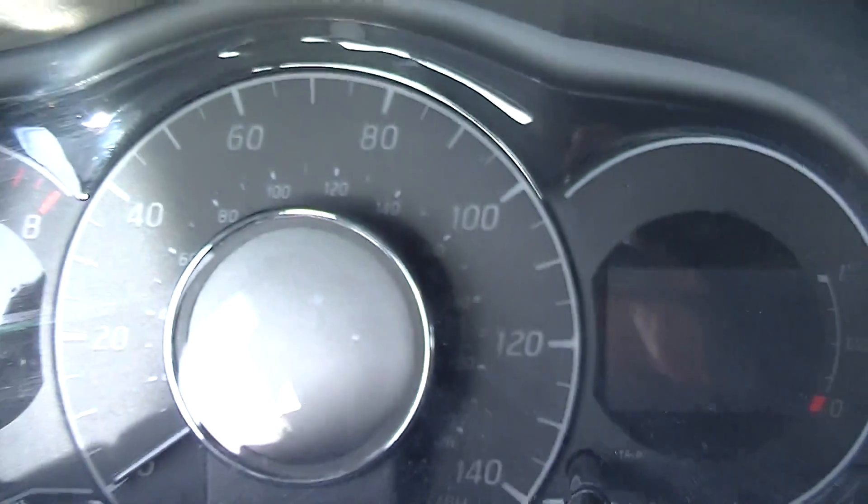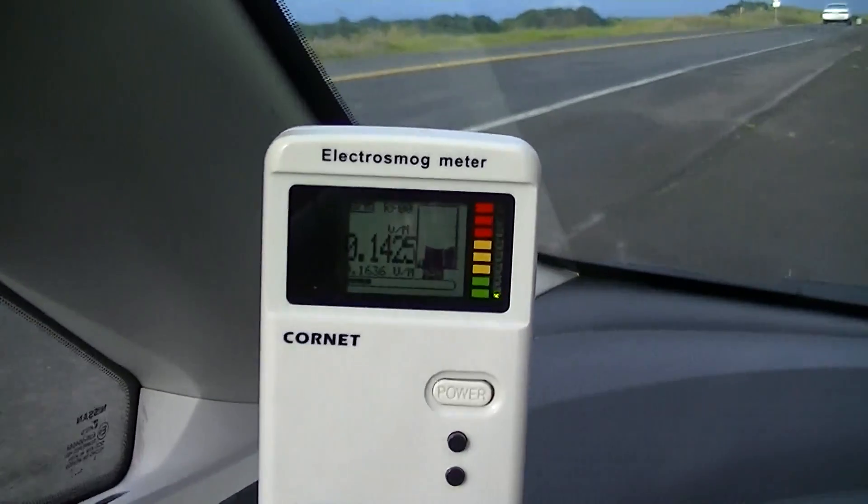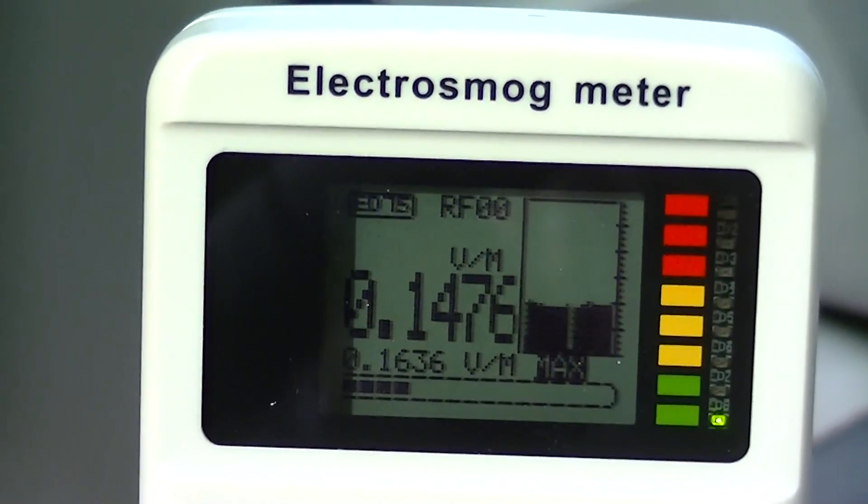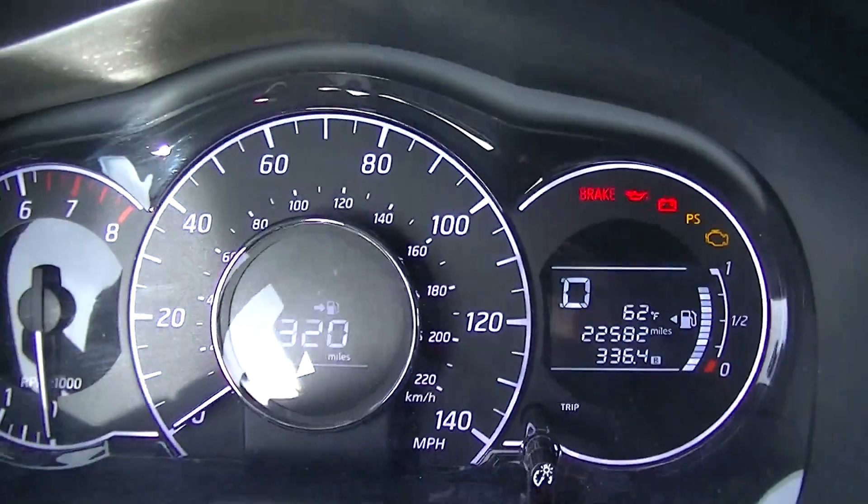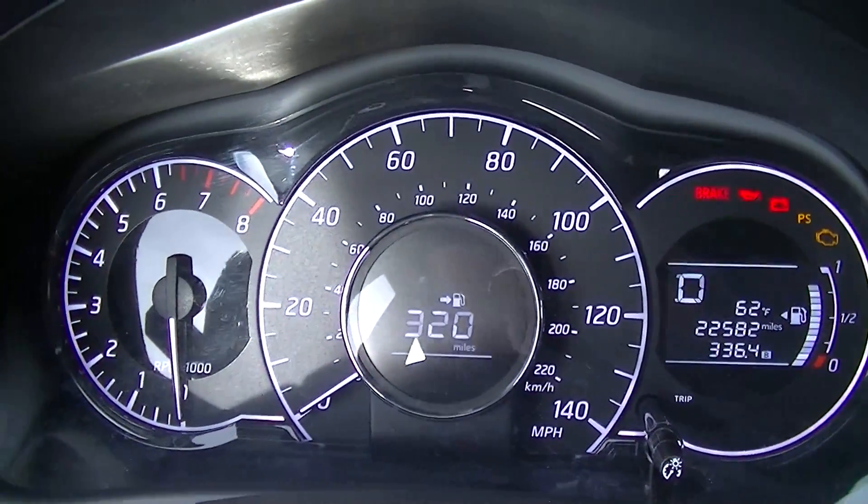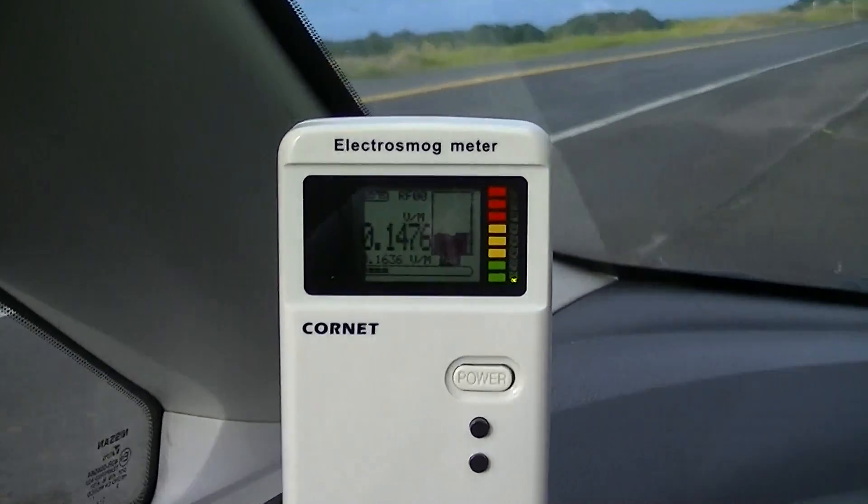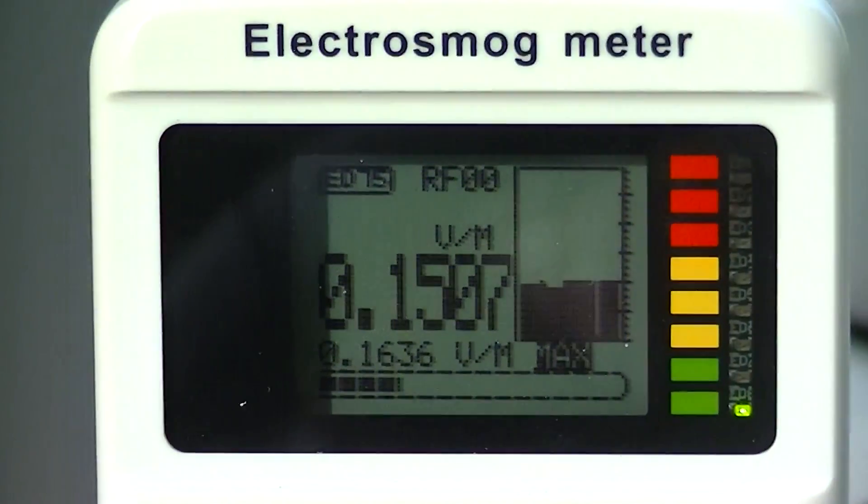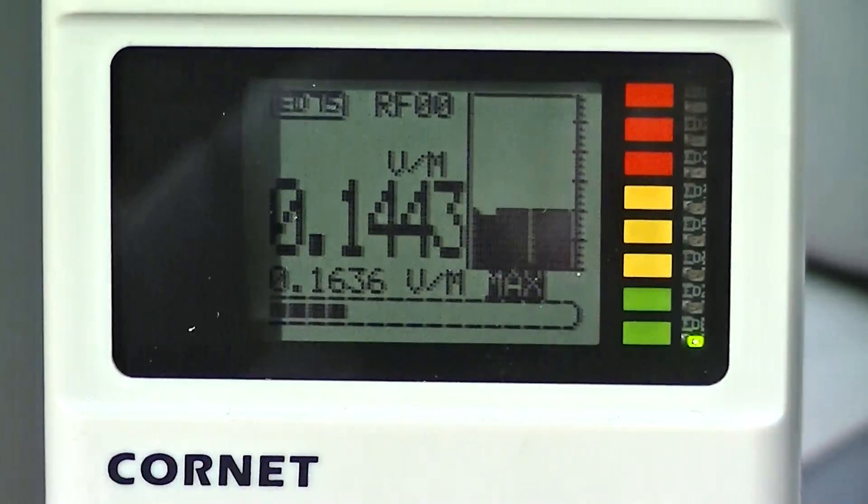The car is off. So we have the key turned to the first switch and I'm going to start the car up. So the ignition is on but the car is not running and this is what we've got. We've got a little bit of radio frequency on this meter. I'm going to start it up.